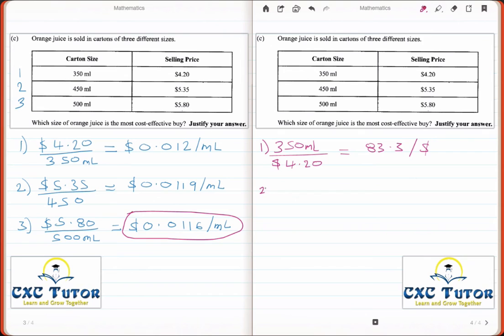For the second juice, that is 450 ml divided by $5.35, which gives us a value of 84.1 per dollar. And finally for the last juice, that is 500 ml divided by $5.80, which will give us 86.2 milliliters per dollar.